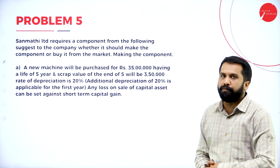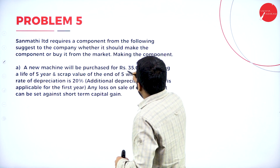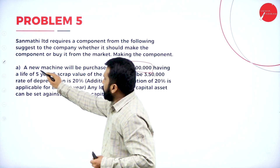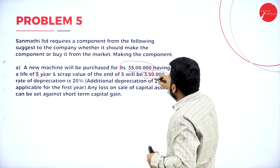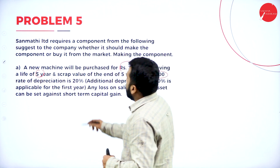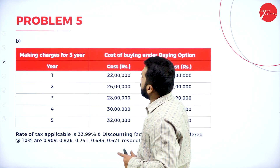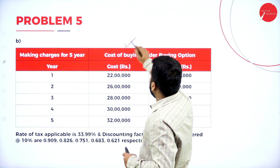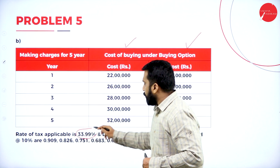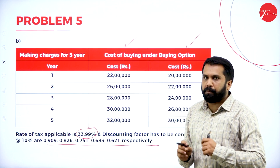Similarly, Problem number 5. All the information is given. New machinery will be purchased at 35 lakh. Life of the machinery: 5 years. Scrap value: 3 lakh 50,000. Rate of depreciation: 20% normal plus 20% additional depreciation — 40% in the first year; second year onwards, 20% only. Tax rate is 33.99%. PV factors are given for all five years.